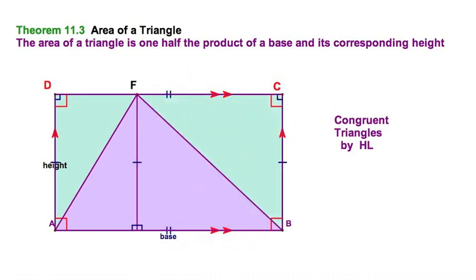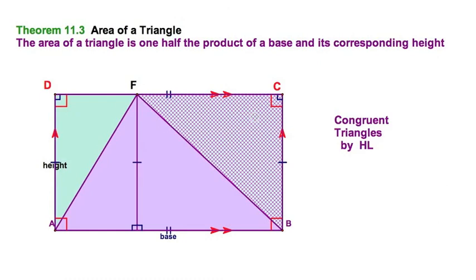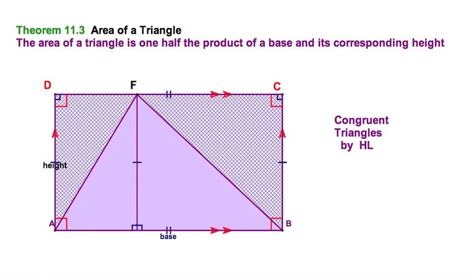So once I've got that, I could conclude that these two green triangles must add up to the same as triangle ABF. Another way of saying that is ABF would be half the area of the rectangle ABCD.